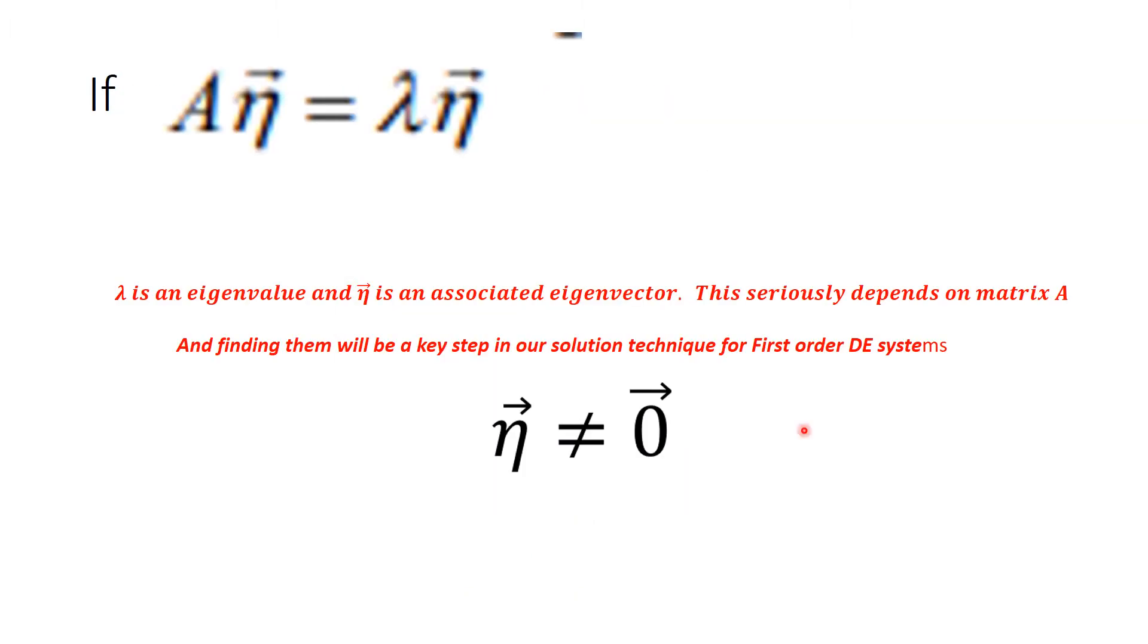If a matrix A times a vector eta is equal to lambda times eta, the same vector, we say that lambda is an eigenvalue and the vector eta is an associated eigenvector. This seriously depends on the matrix A, but the point is that this eigenvector does not change direction when mapped through A, it just gets shorter or longer. Finding these eigenvalues and eigenvectors is a key step in our solution technique for first-order differential equation systems.